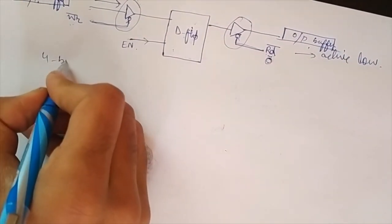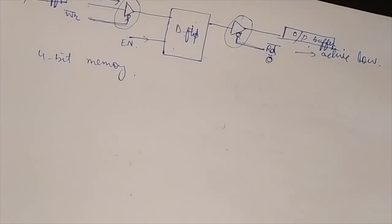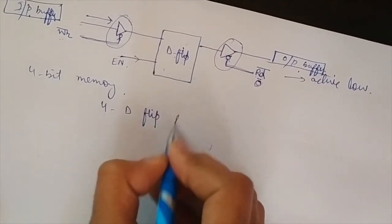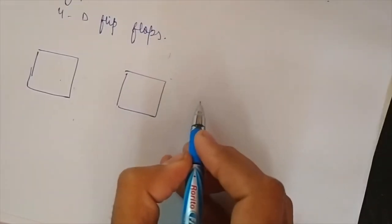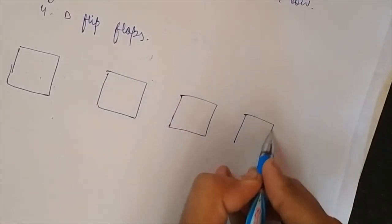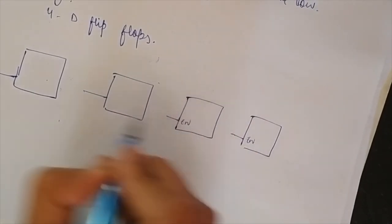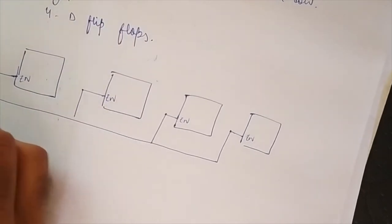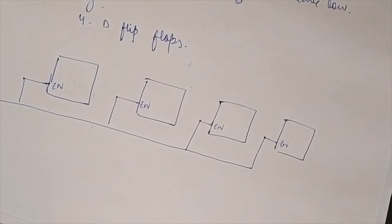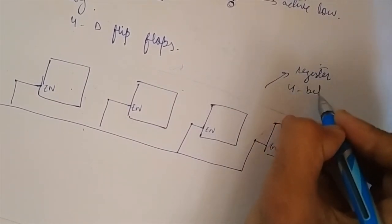Now let's say we want to have a 4-bit memory. Then each location should have four D flip-flops. So we will have four D flip-flops: 1, 2, 3, and 4. These four flip-flops will have an enable signal that activates all four flip-flops together, so they are connected to each other. This will be a complete register — one register with 4-bit storage.